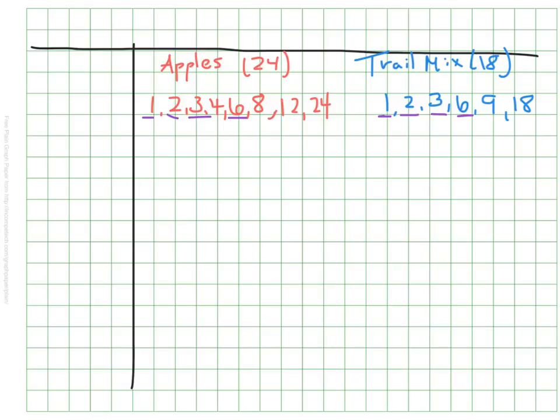If I divide my apples into eight different groups, that's great, but I can't divide my trail mix into eight even groups, because eight is not a factor of both of them. So we're just looking for the common factors.